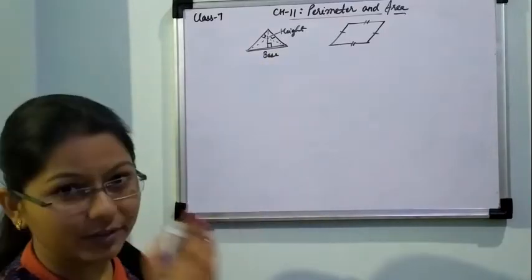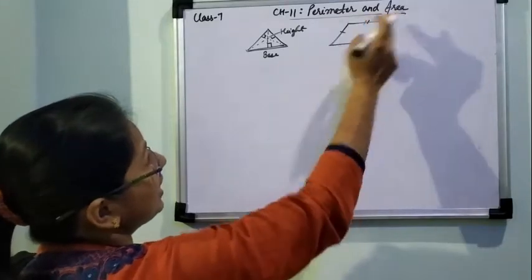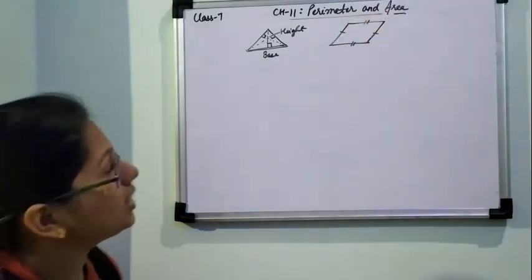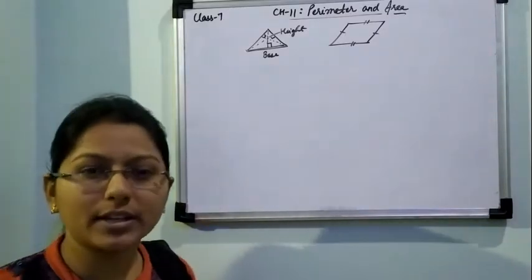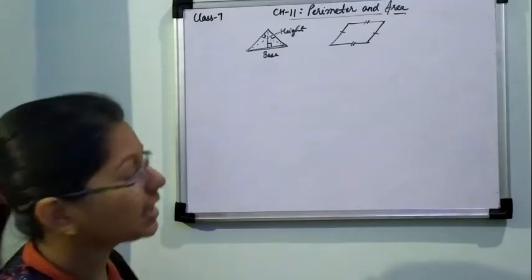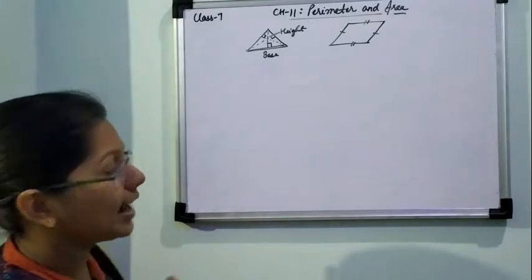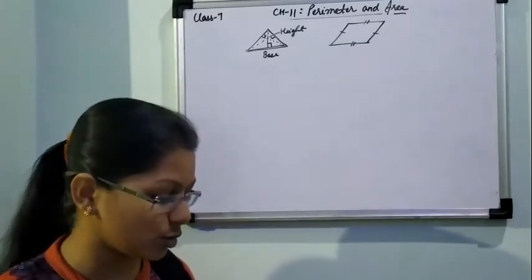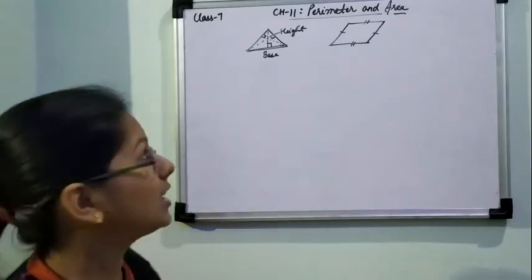We will basically be dealing with area of triangle and area of parallelogram. If we talk about the perimeter of a triangle, there is no single formula. For an equilateral triangle, it is 3 times a side. If it is a scalene triangle, we add all 3 different sides. If it is an isosceles triangle, we add the 2 equal sides and 1 unequal side. So we simply do addition for the perimeter.